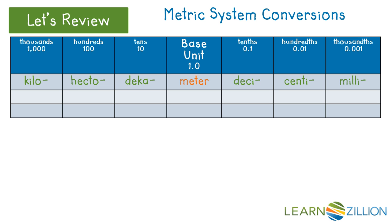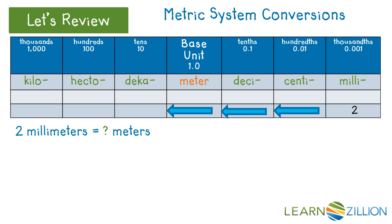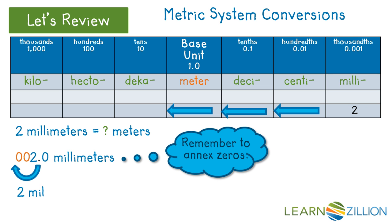In converting a smaller unit to a larger unit, you have to divide by moving the decimal point to the left. In this problem, we are converting millimeters to meters. First, you must determine how many places to move the decimal point. Move the decimal point one place to the left the same number of times it takes to move from the column of the smaller unit to the column of the larger unit. In this problem, we need to move the decimal point three places to the left. So, starting from the decimal point after the two, we move the decimal three places to the left. Don't forget to annex zeros as you move the decimal point. So, two millimeters equals two thousandths meters.